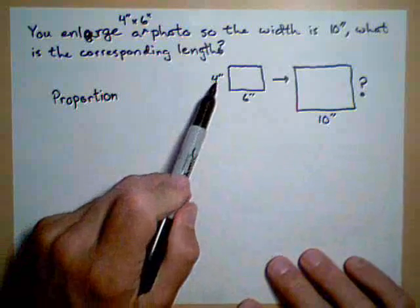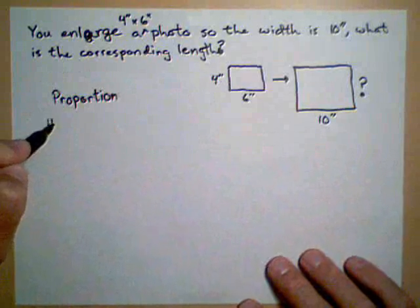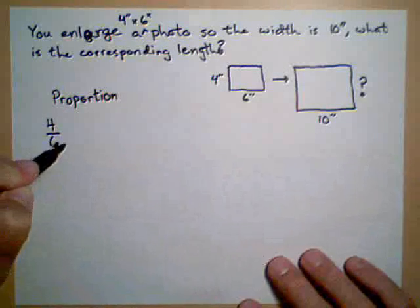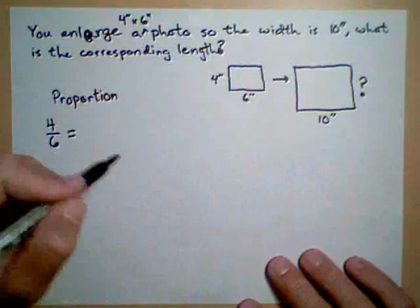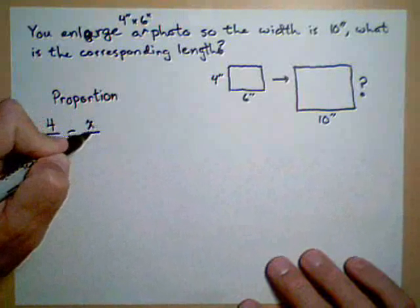One way we might do that is we might set up the ratio of the sides. So 4 over 6 for the small photo is equal to, instead of doing a question mark, let's use a variable, x is equal to x over 10.